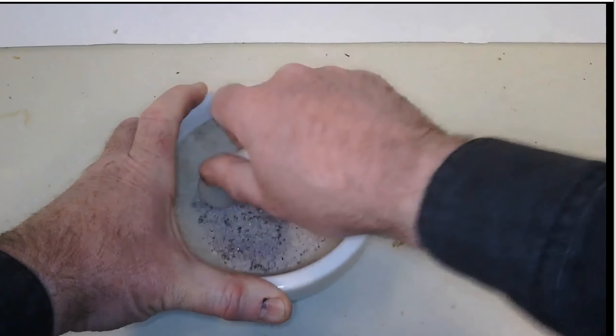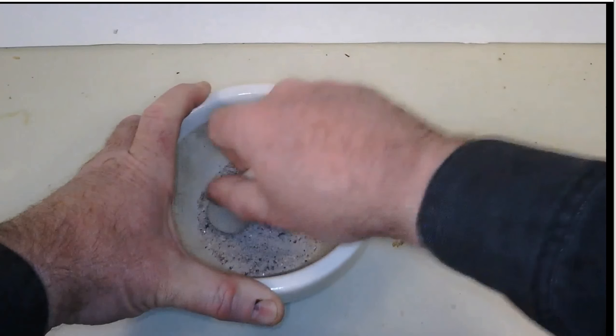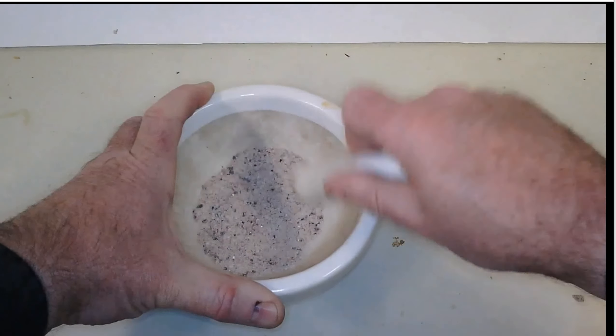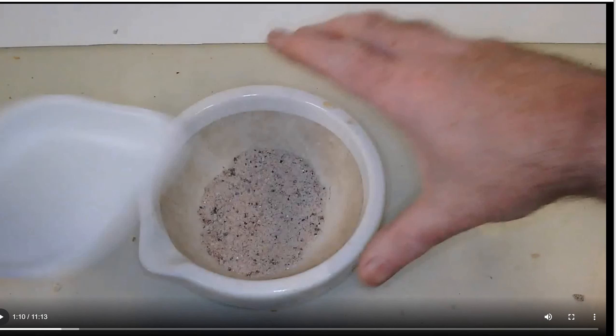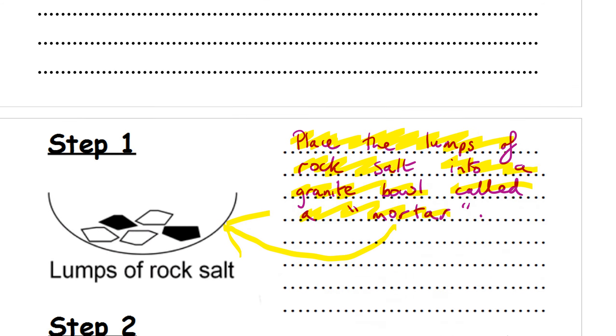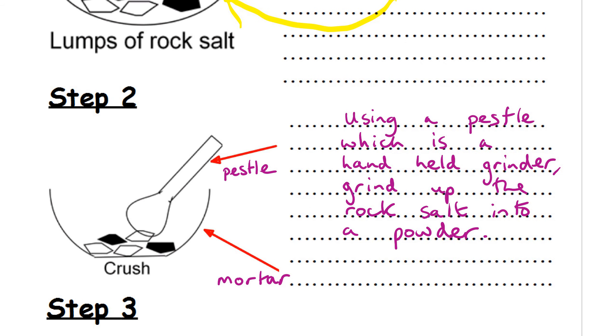And we are grinding up those lumps of rock salt into a nice fine powder. It takes a little bit of time. So that was step two. Step two, using the pestle and the mortar. Grind up the rock salt into a powder. Now let's see what happens next.